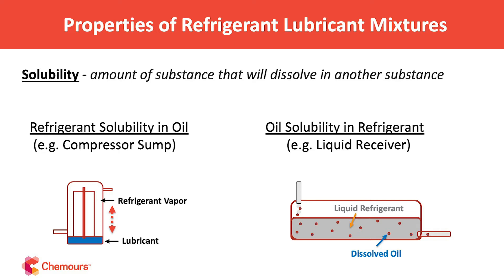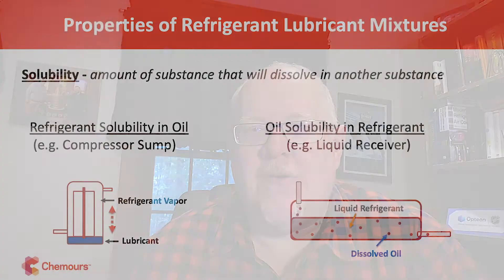On the other side, in something like a liquid receiver — which is mainly bulk refrigerant — there is some entrained oil circulating in the system that gets into the receiver and interacts with the bulk liquid refrigerant. So how much of that oil dissolves in the bulk refrigerant matters, because it can then be transported out of the receiver and back to the compressor. It's important to understand solubility from both perspectives.